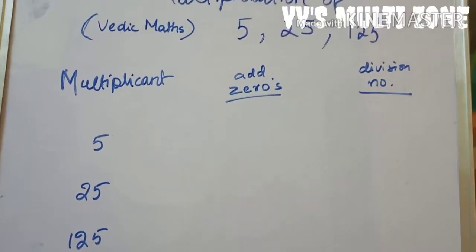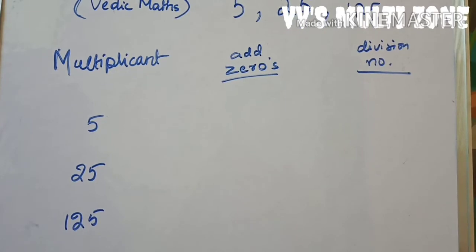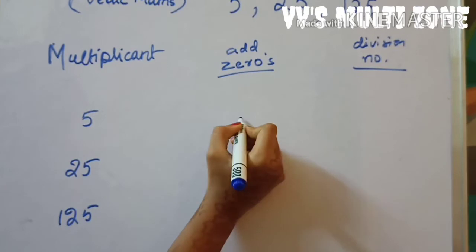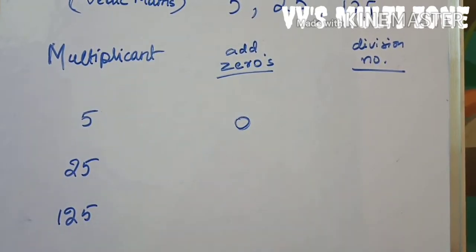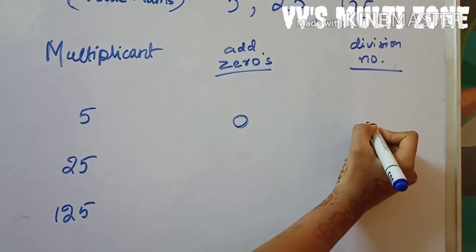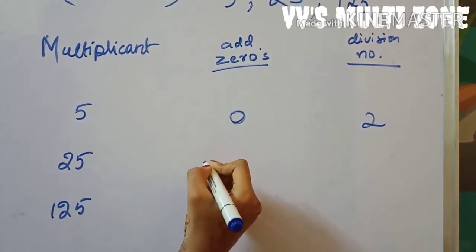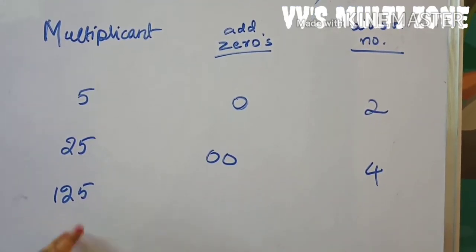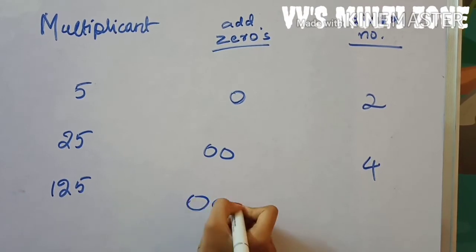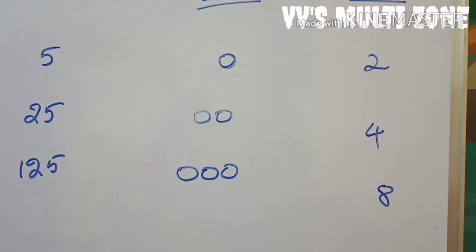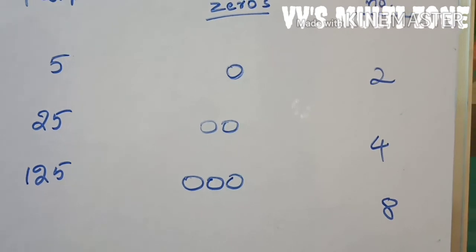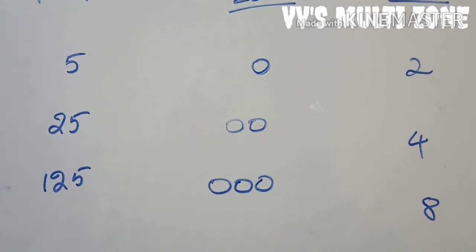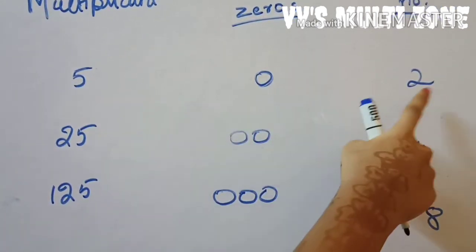I've created a table which is important to remember. For the multiplicand 5, add one zero and divide by two. For 25, add two zeros and divide by four. For 125, add three zeros and divide by eight. Remember to add these zeros at the right side of the number.